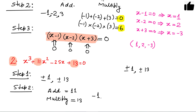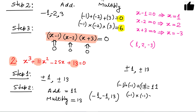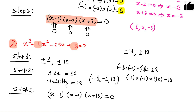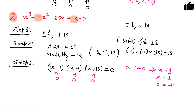Taking minus one, minus one, and thirteen: adding gives minus one plus minus one plus thirteen equals eleven, and multiplying gives minus one times minus one times thirteen equals thirteen. Both conditions are satisfied. Note that a number can be repeated, giving a repeated root. The factors are x minus one, x minus one, and x plus thirteen, giving roots one, one, and minus thirteen.